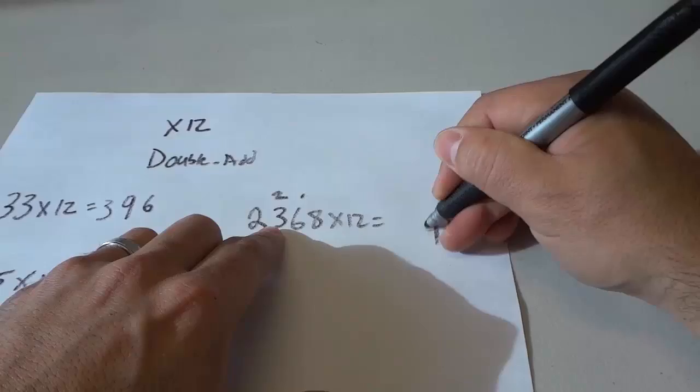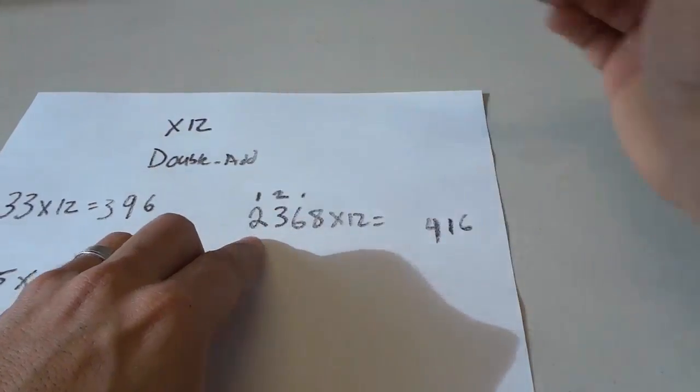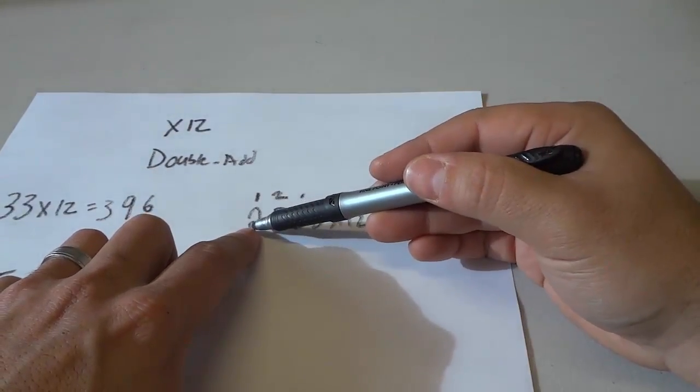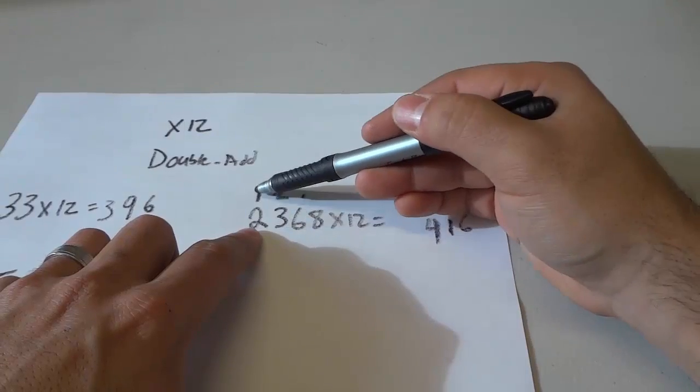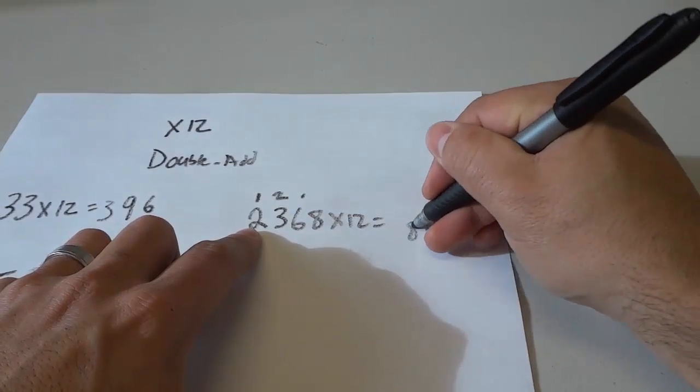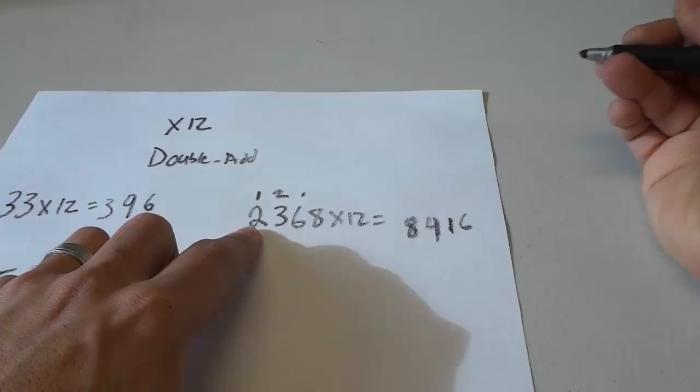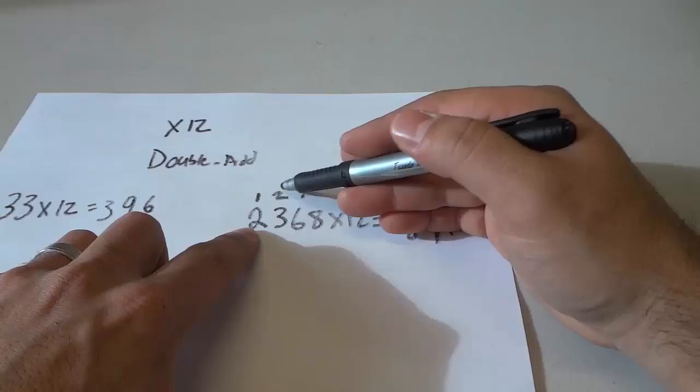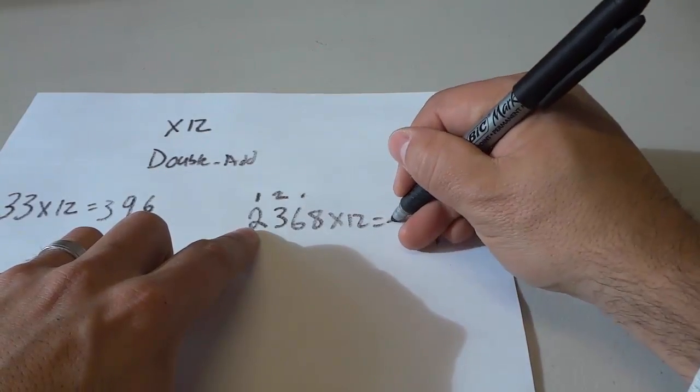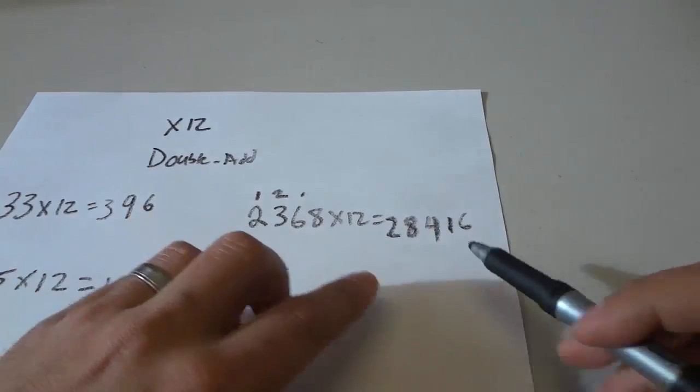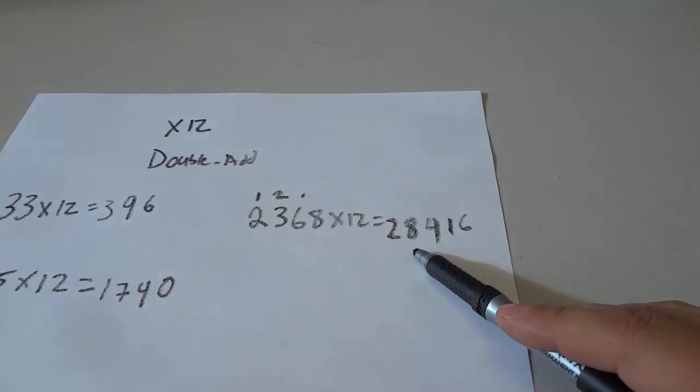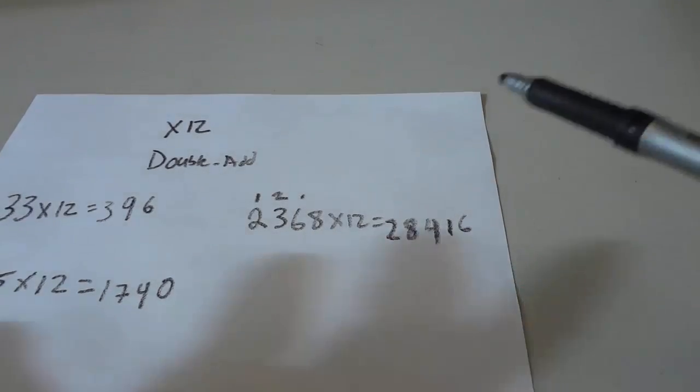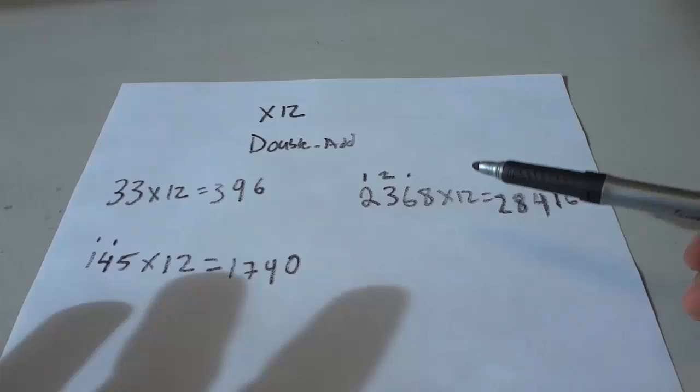Double 2 gives us 4. Add 3 gives us 7. Add the 1 up there. Gives us 8. We write down 8, right over there. And we double the 0, which gives us 0. We add the neighbor, which is 2. Gives us 2. 28,416. That is our answer. So you can literally use this method.